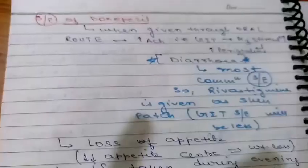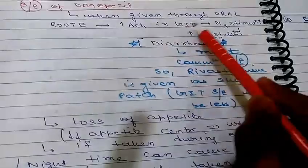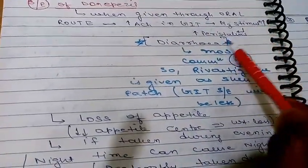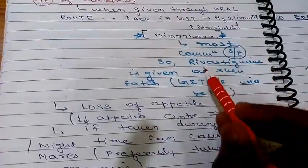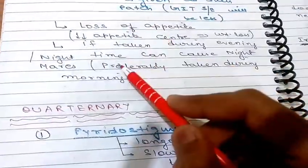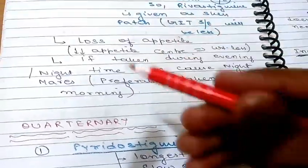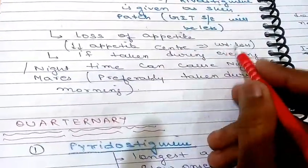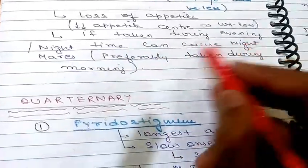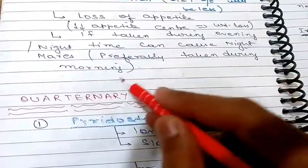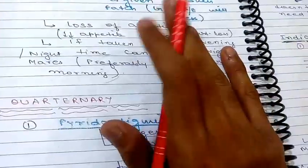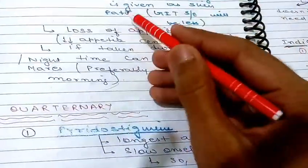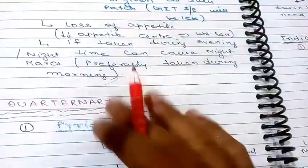Side effects of donepezil: when given orally, increased acetylcholine in the GIT leads to increased M3 stimulation and increased peristalsis, causing diarrhea — the most common side effect. There is also loss of appetite, because it acts on the appetite center and causes decreased activity there, leading to weight loss. If taken during evening or nighttime, it can cause nightmares. So it is preferably given in the morning because of its CNS action. Side effects: diarrhea, loss of appetite, and nightmares.